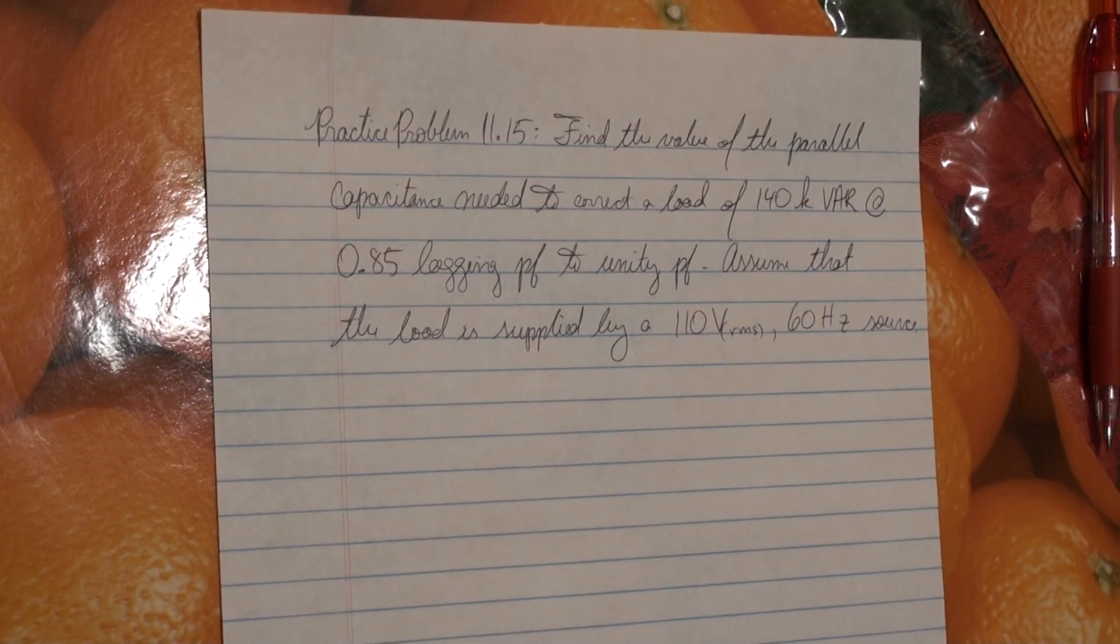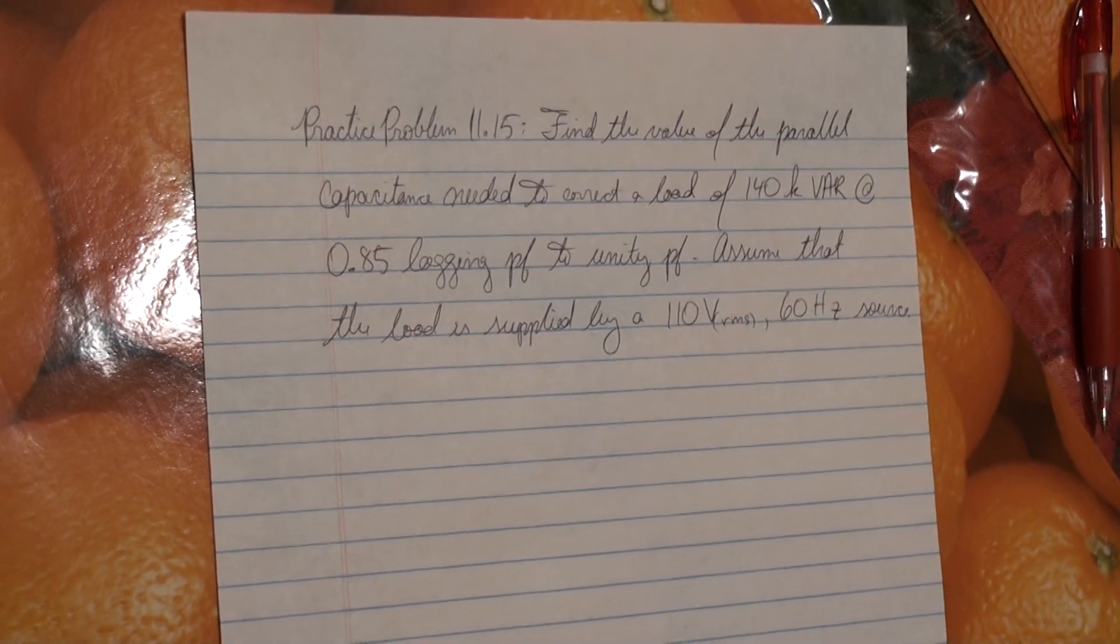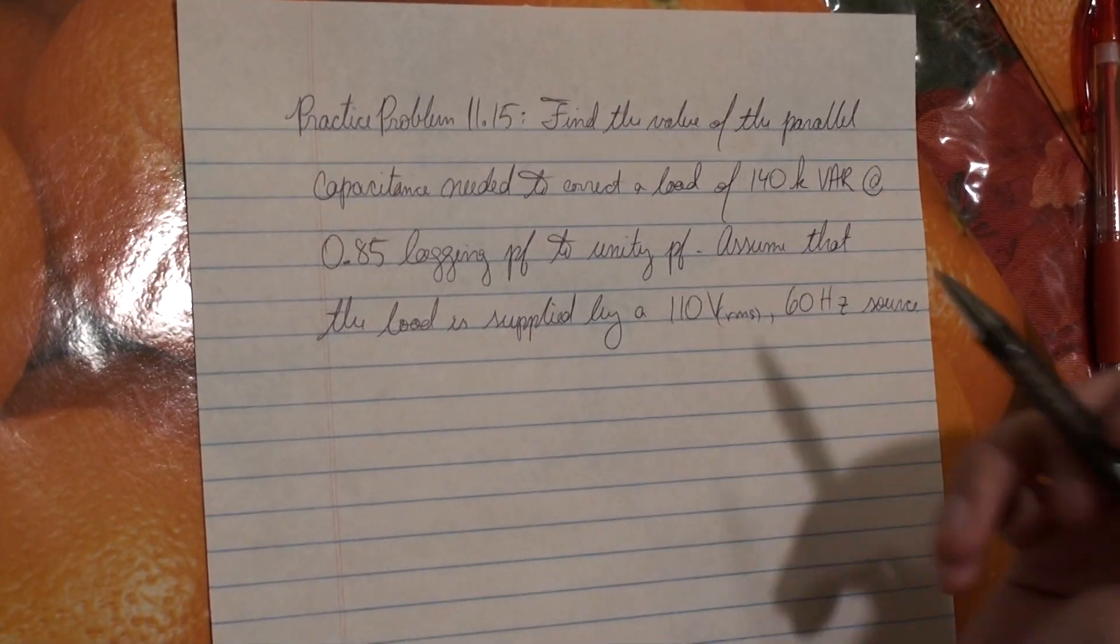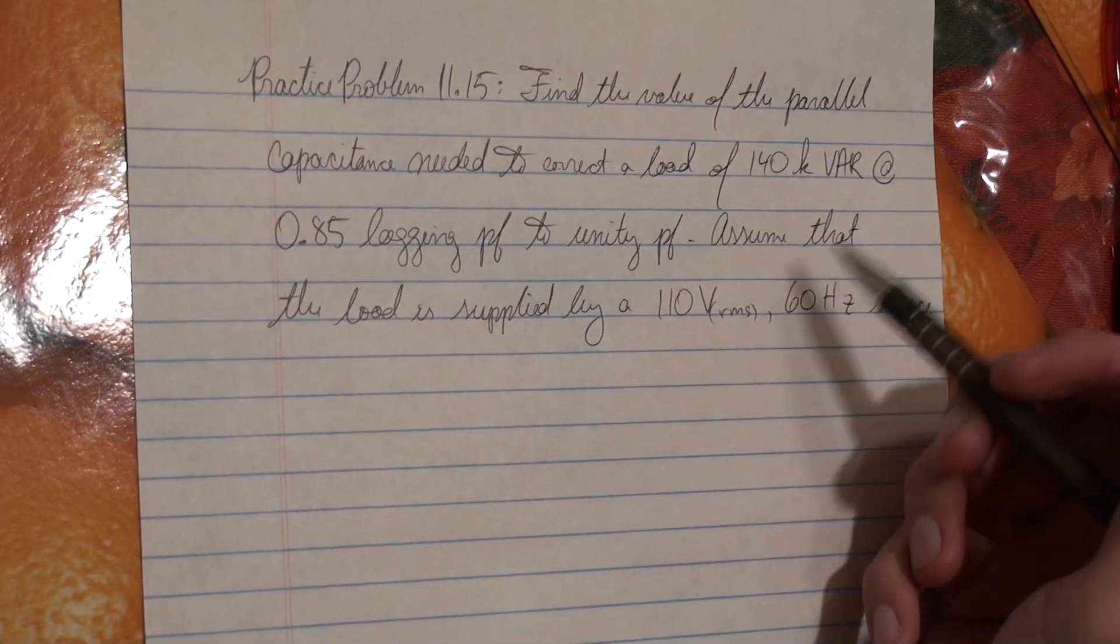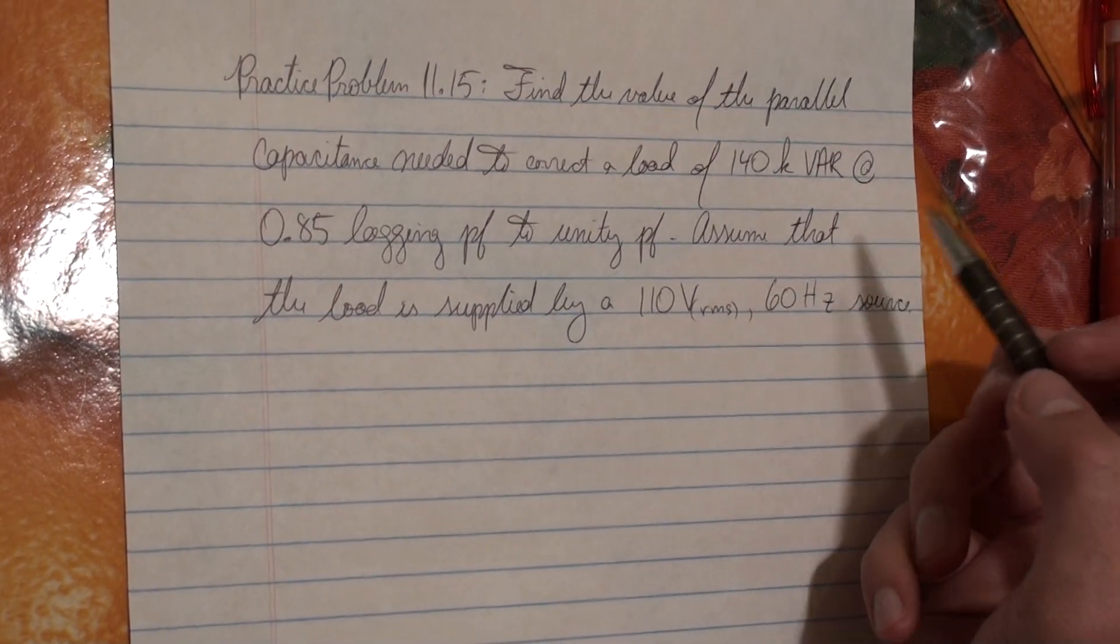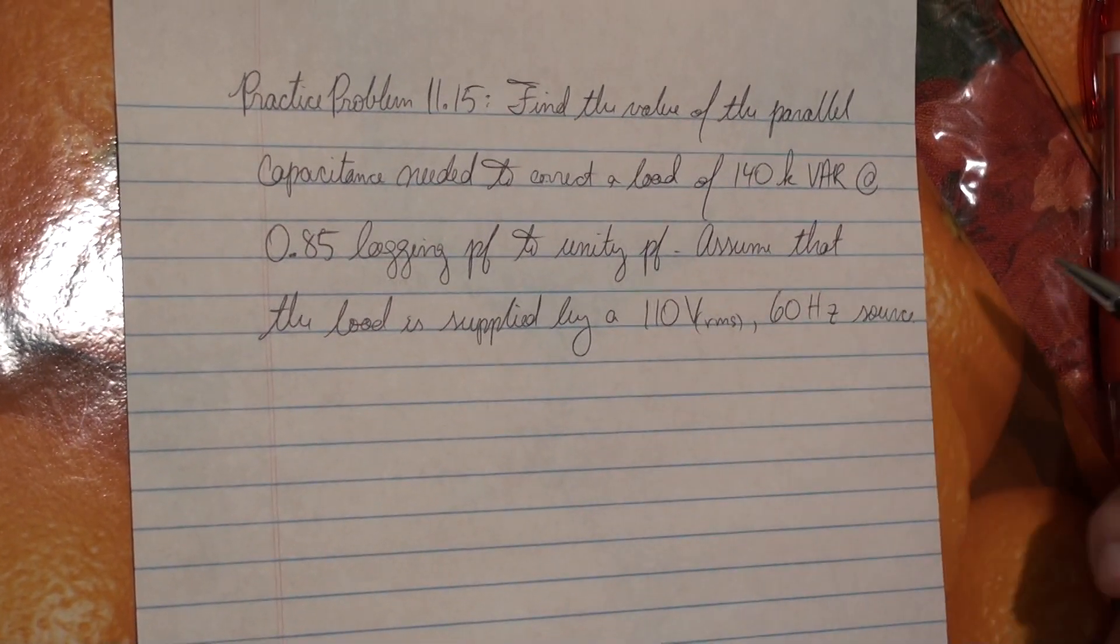So the question states, find the value of the parallel capacitance needed to correct a load of 140 kVAR at 0.85 lagging power factor to unity power factor. Assume that the load is supplied by a 110 volt RMS 60 Hz source.